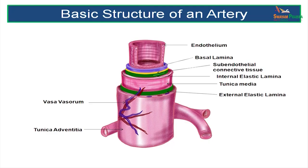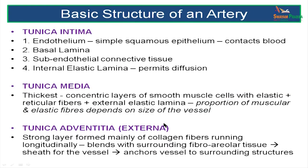The next layer is the tunica media, which is a thick muscular and elastic layer, outer to which is the external elastic lamina. The outermost layer is the tunica adventitia, which also contains vessels called vasa vasorum. The artery therefore has a tunica intima, a tunica media, and a tunica adventitia.